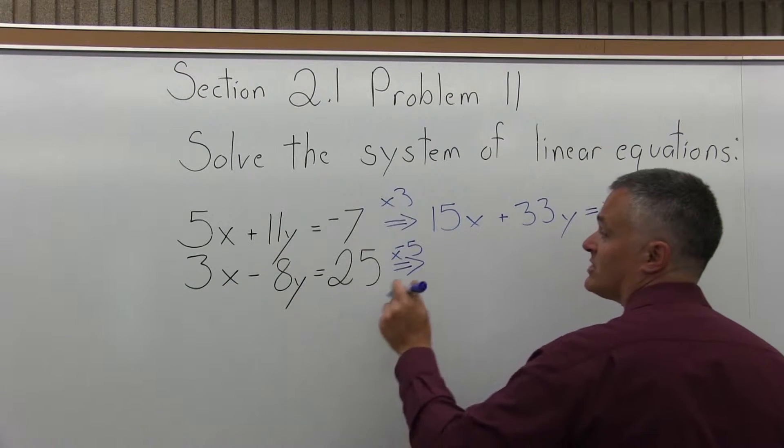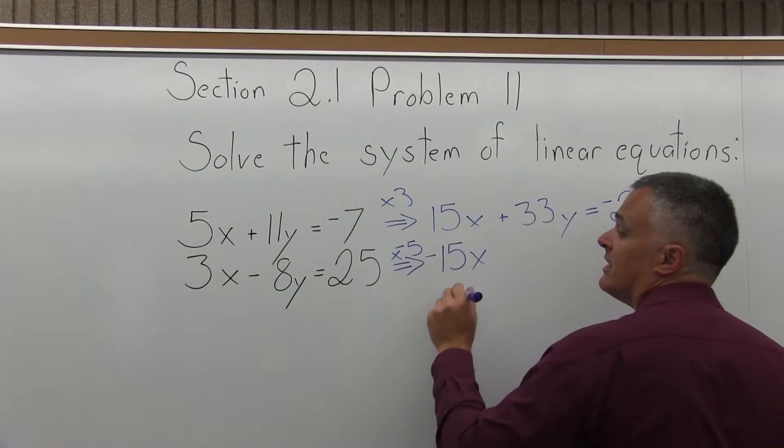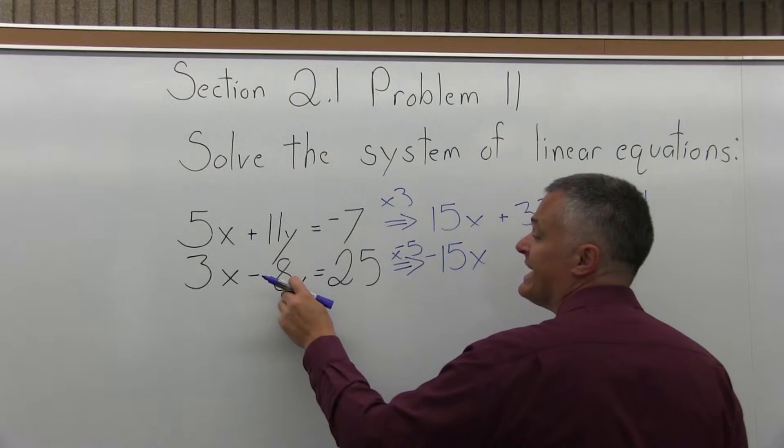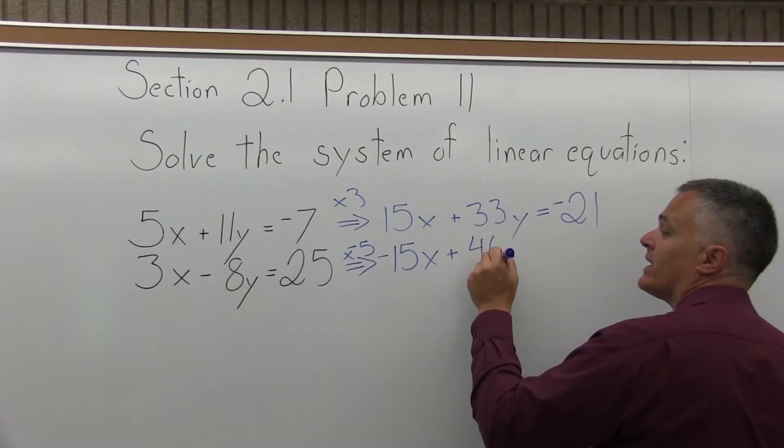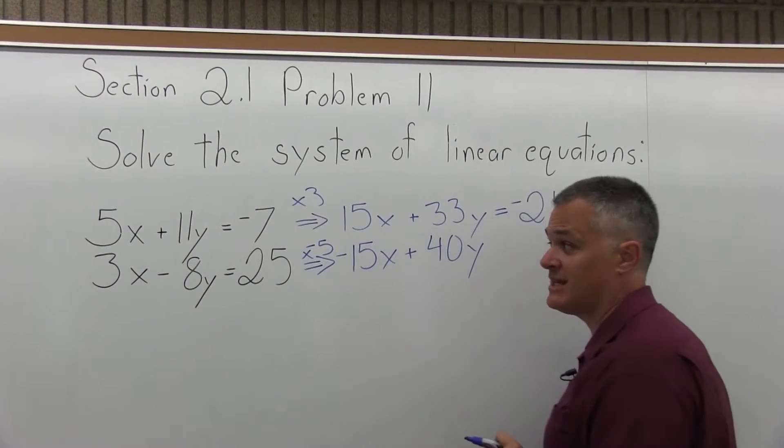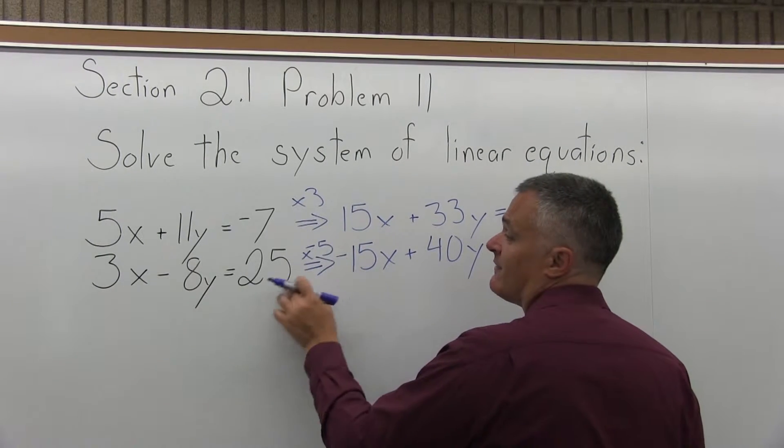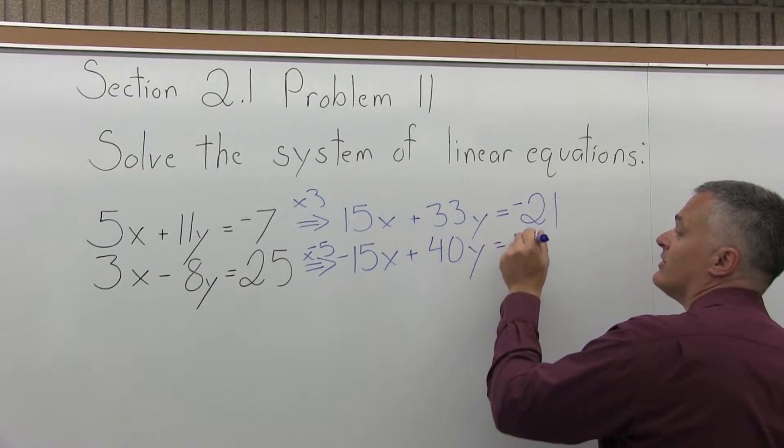So negative 5 times 3x is negative 15x. Negative 5 times negative 8y is positive 40y. Don't forget, a negative times a negative, the negatives cancel. And then negative 5 times 25 would be negative 125.